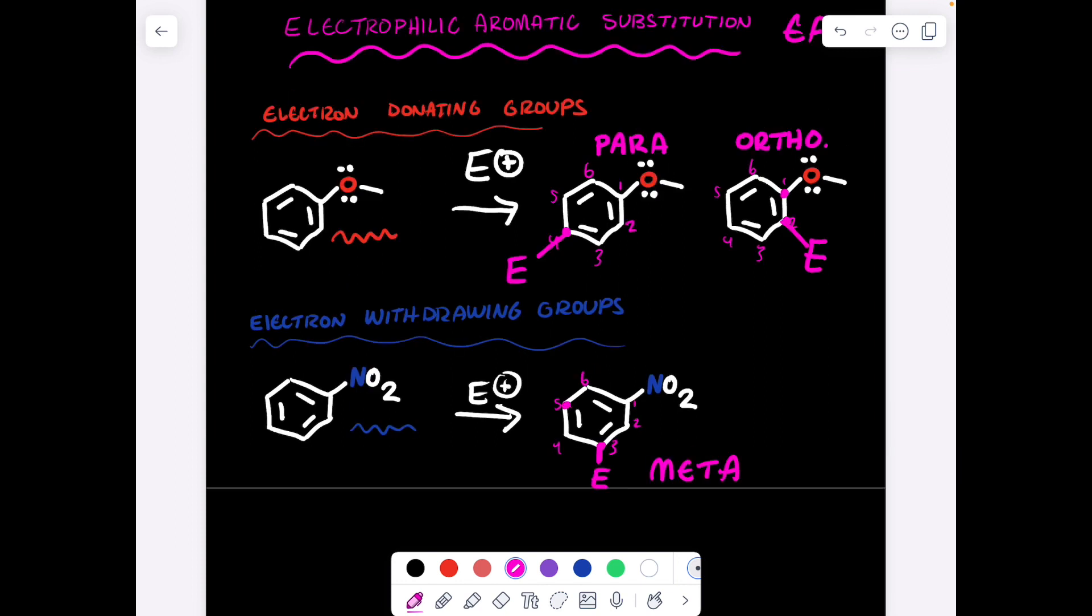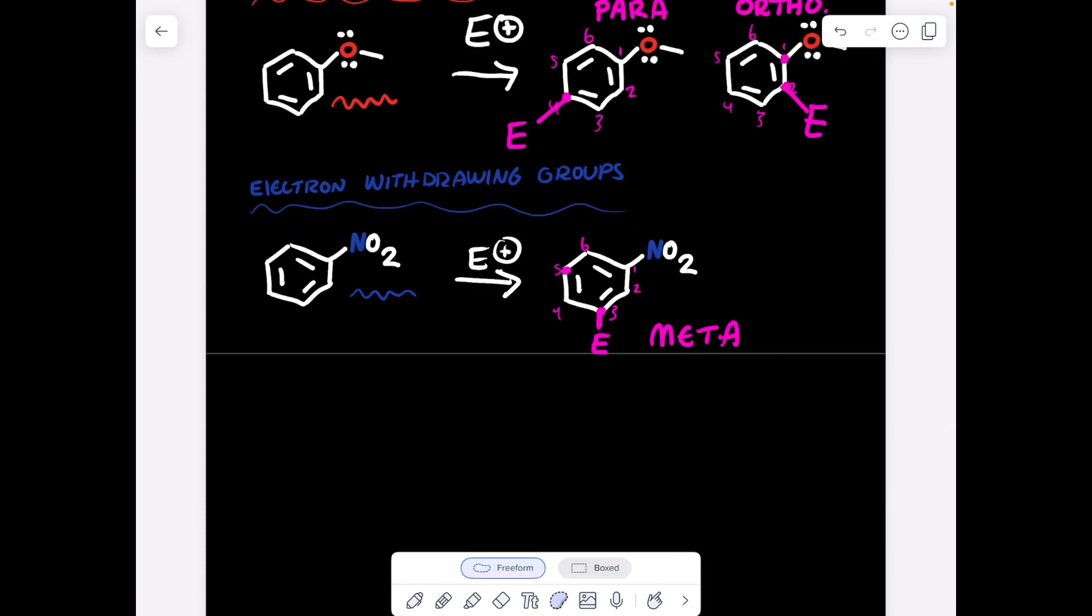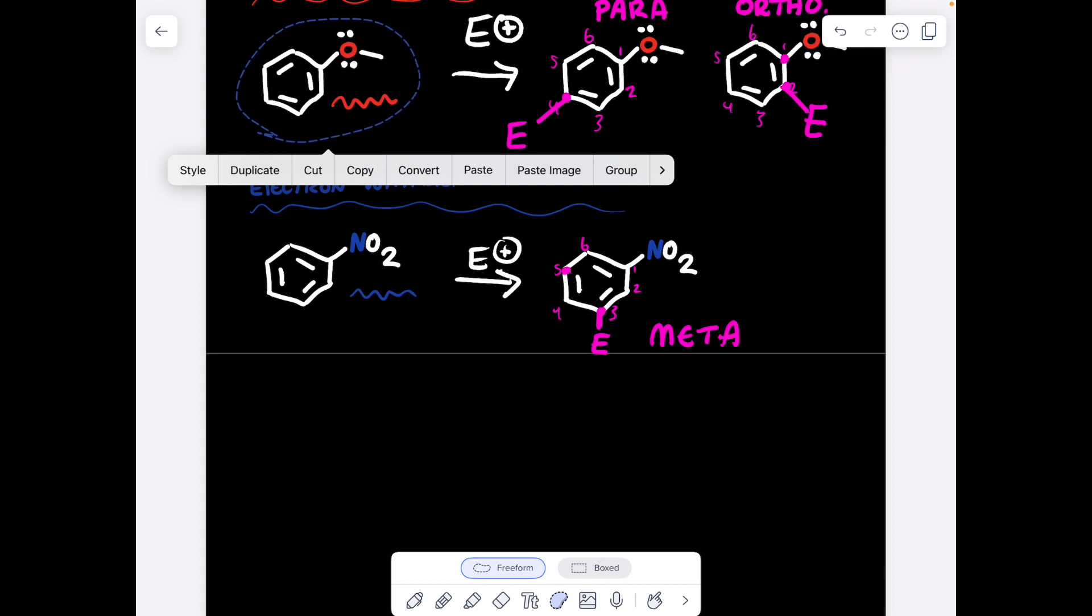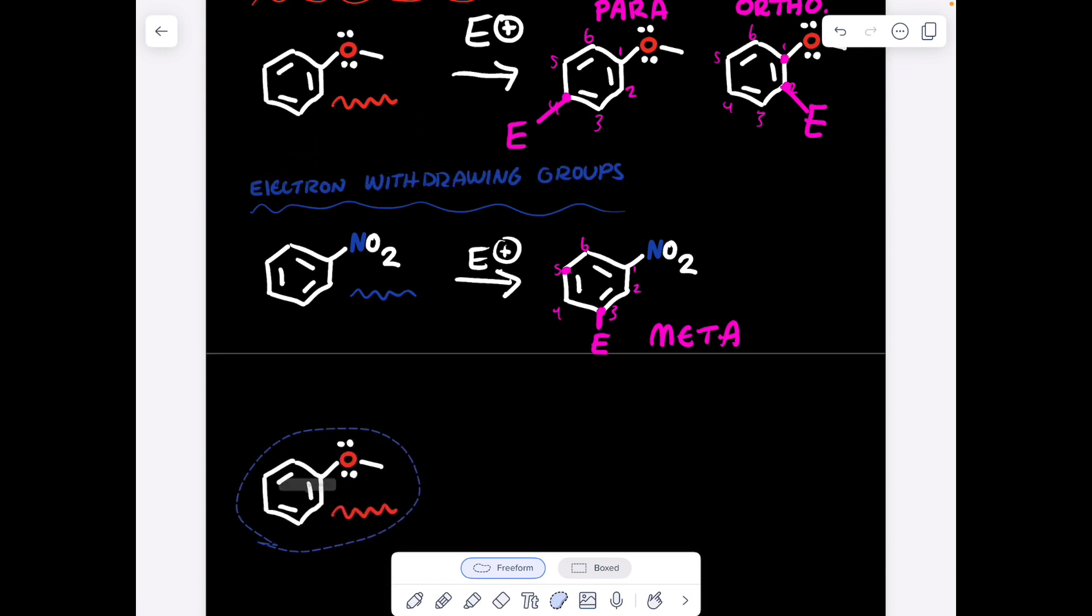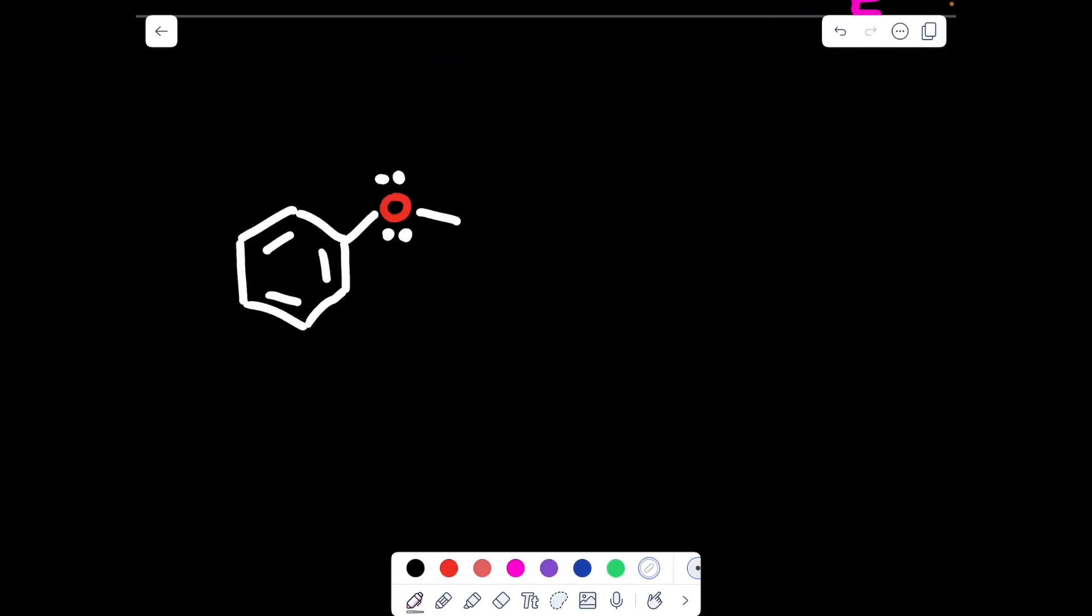So to explain why this happens, we have to look at resonance, because resonance is going to explain to us where the electron density is. And in organic chemistry, the electron density tells us exactly how a reaction is going to proceed via opposites attract. So starting off, let's look at the resonance of benzene with a methoxy group.